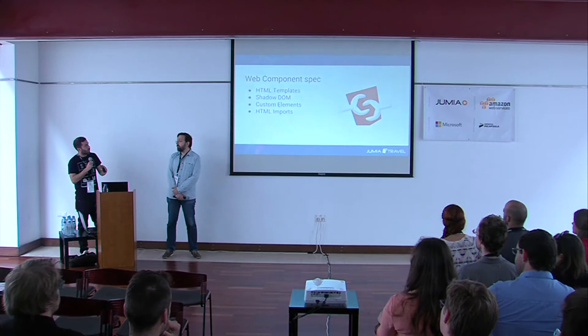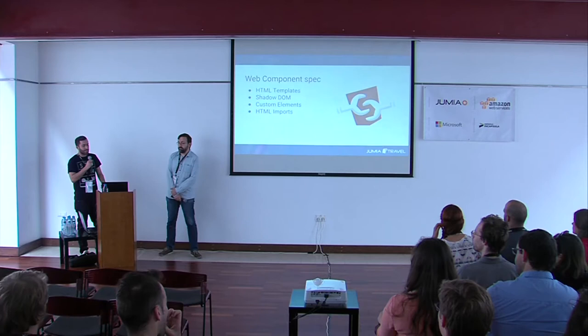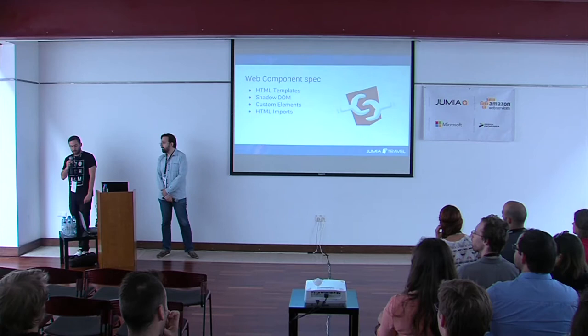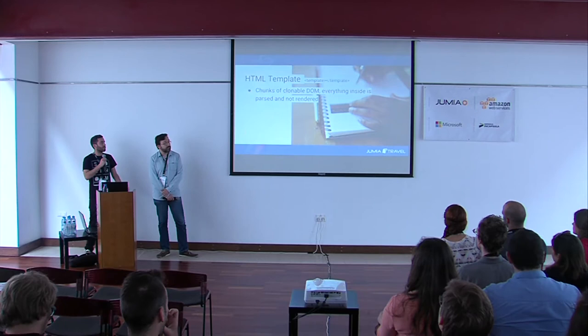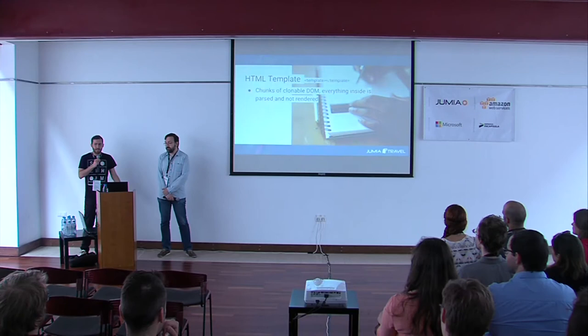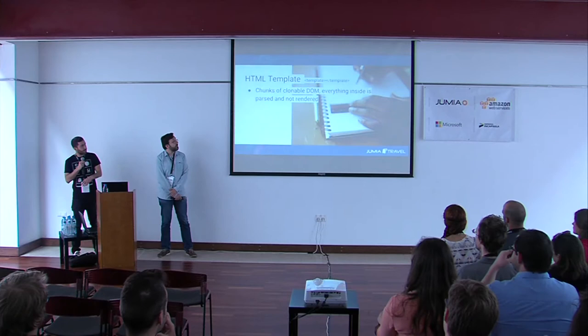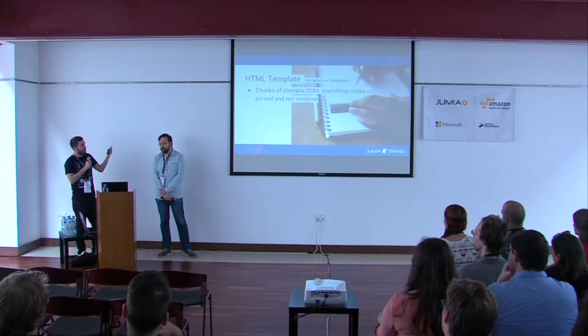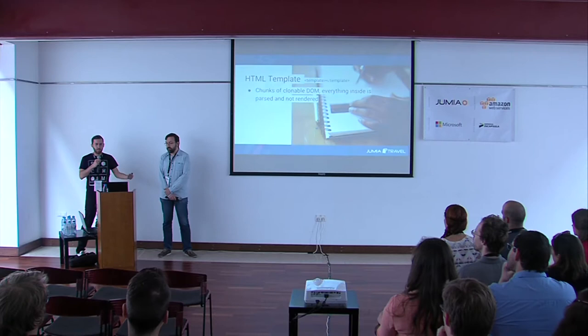The Web Components pack covers four APIs: HTML templates, Shadow DOM, custom elements, and HTML imports. Starting with HTML templates - this is where we define our reusable code. In its most simple terms, it's a tag where you put your HTML in and nothing will be rendered. The browser will parse that information but nothing will be rendered. For example, an image tag inside a template will not be fetched by the browser, or even a video with autoplay will not play.